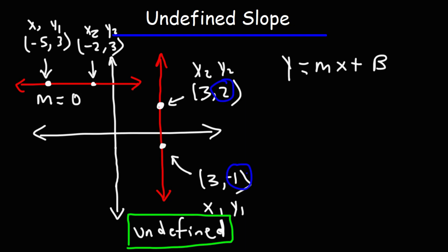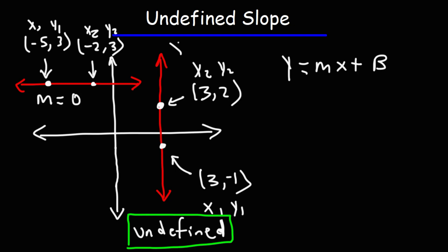The y values are not constant, but notice that the x values are constant — it's always three. Any point along this vertical line will have an x value of three. So to write the equation of a vertical line, it's simply the x coordinate: x equals three.